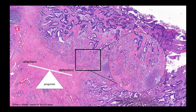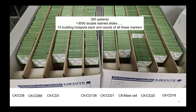This leads to a more complex framing: tumour buds as 'attackers' and the immune response as 'defenders.' The key question is what is the balance between bud burden and immune reaction against those buds, and whether that balance impacts patient outcome — moving beyond looking at a single feature at a time.